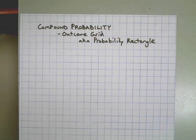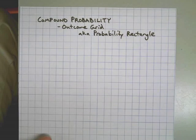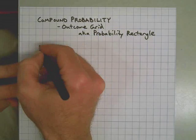This is a problem of compound probability. That means we have two independent events and we're asking questions about the probability of two of those events happening at the same time. Question one.